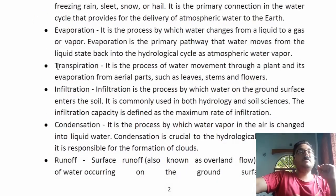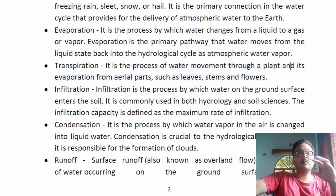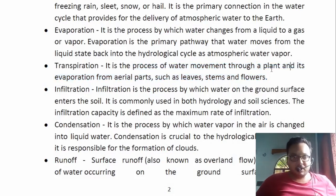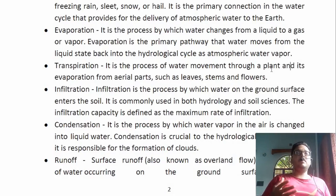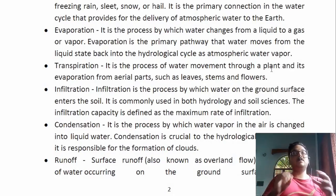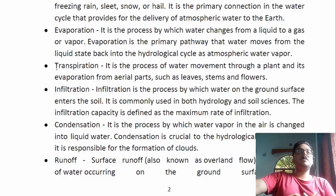Next is transpiration — the process of water movement through a plant and its evaporation from aerial parts such as leaves, stems, and flowers. Plants release excess water not required for photosynthesis as vapor through their stomatal openings. This water vapor again contributes to condensation of clouds. Transpiration is one process by which water from Earth goes back to the atmosphere.